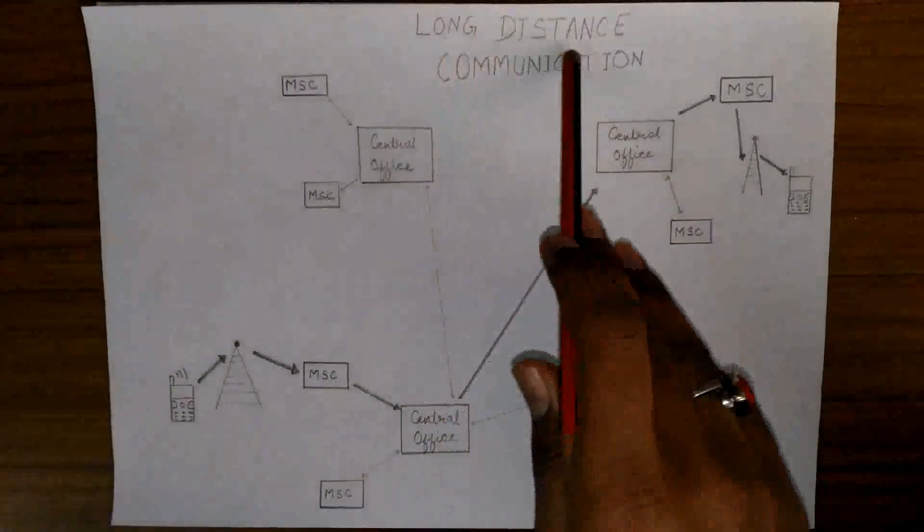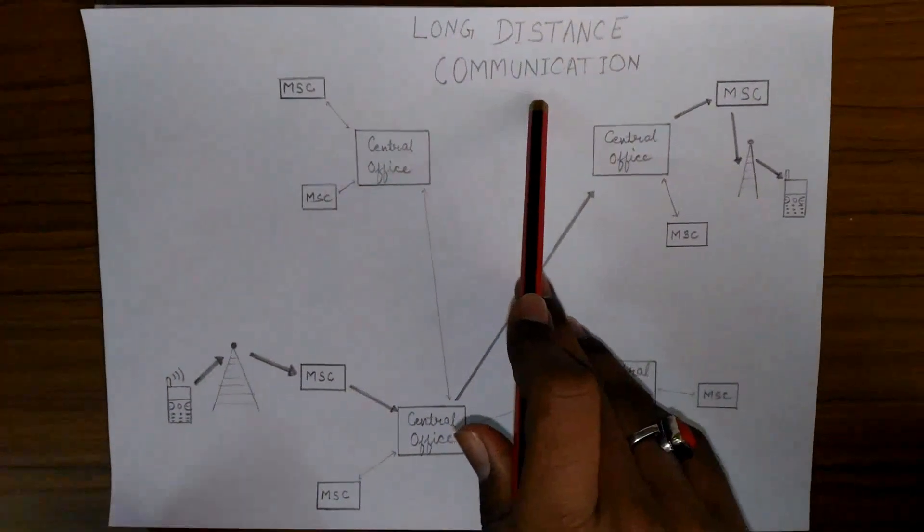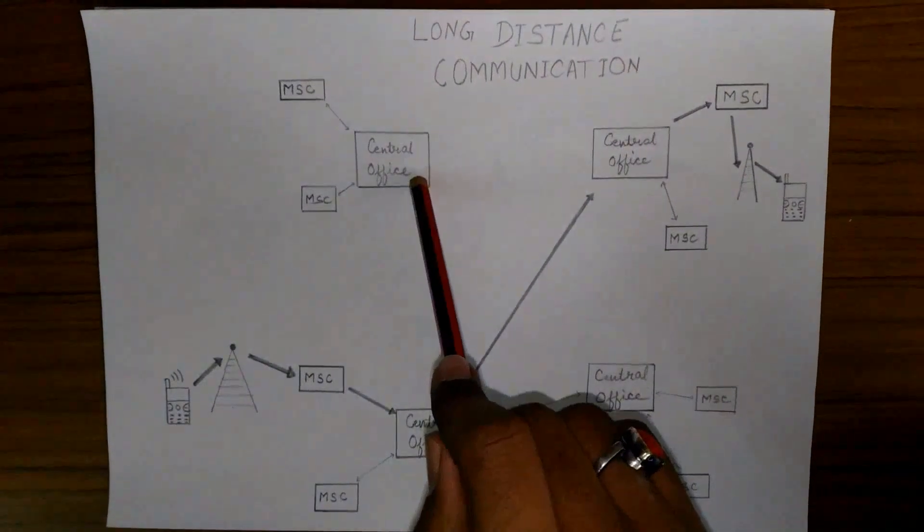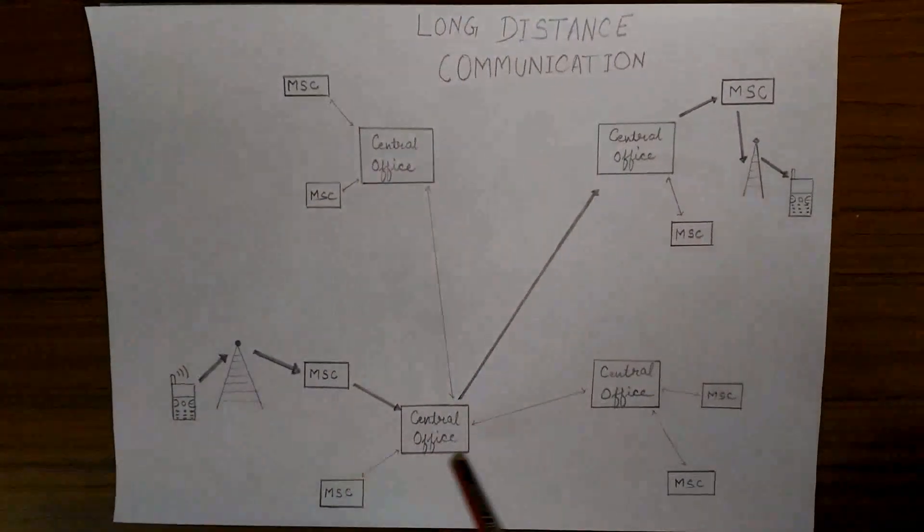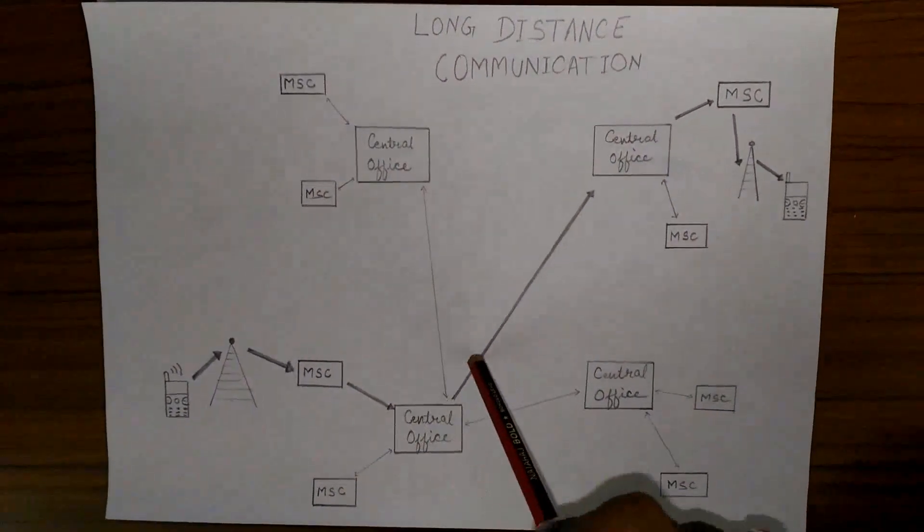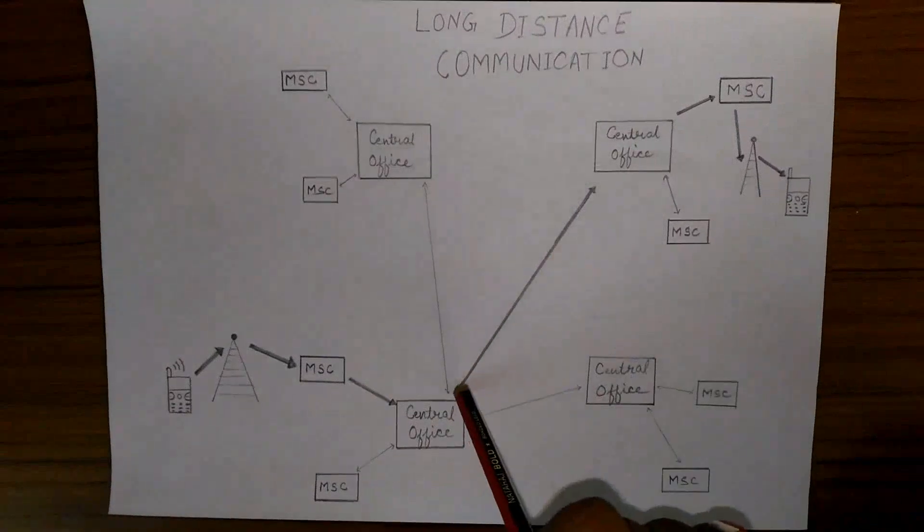Now let's see how long distance communication takes place. First of all, we need to know what a central office is. A central office covers all the MSCs of a larger area, and they are connected to each other across the world through satellites.